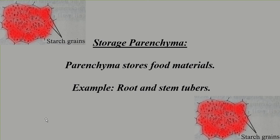Storage parenchyma cells store food materials like starch grains. Examples include root and stem tubers such as carrot and beetroot. In the picture you can find storage parenchyma cells with starch grains.